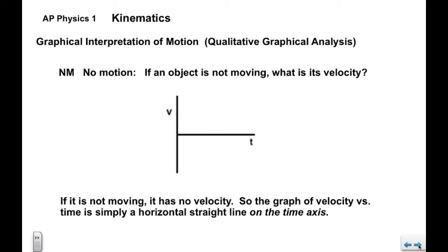Now we'll look at each type of motion in turn. No motion should be easy. If the object isn't moving, its velocity is zero. So the graph of velocity versus time for no motion is a horizontal straight line on the time axis.